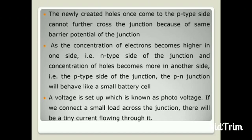As the concentration of electrons becomes higher in one side, the PN junction will behave like a small battery cell. A voltage is set up which is known as photo voltage. If we connect a small load across the junction, there will be a tiny current flowing through it.